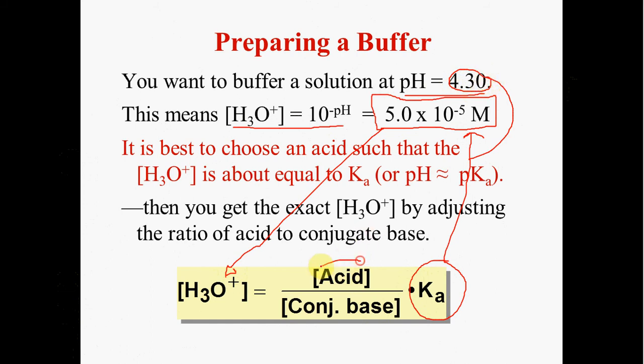And we would want these ratios to be as equivalent so that basically they can absorb, in quotes, absorb acid or added base. So again, an equal concentration would pretty much cancel out, leaving you with a Ka equal to the hydronium ion. You will always probably have to adjust this ratio in order to get the exact pH.